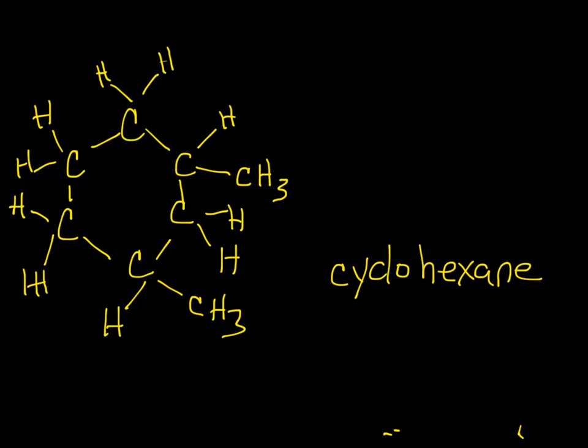Okay? This time, because we have branches, we have to number the carbons. And remember, we're going to number the carbons starting with the first branch. So wherever the first branch is, that's got to be carbon number one. So we'll have one, two, three, four, five, and six.